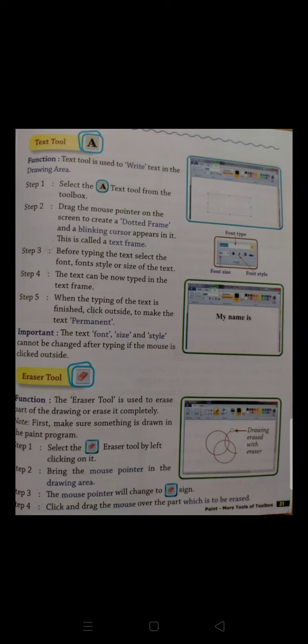Drag the mouse pointer on the screen to create a dotted frame and a blinking cursor appears in it. We will drag the mouse pointer.